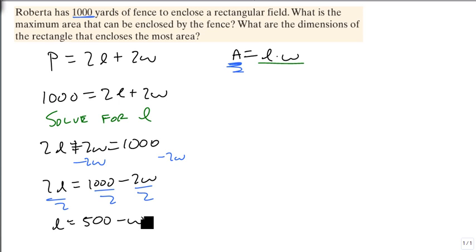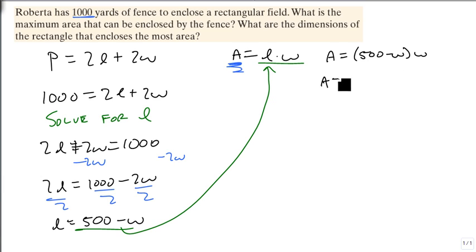Now this is nice, because now that we know what L is, we can take this and plug it in to L. So our area is now 500 minus W times W. So area equals minus W squared plus 500W. Now here's where things get interesting. Because at this point, we have a quadratic, which means it's got a graph, and we know it's going down, which means it has a maximum. And that's what we need to find, is that maximum.